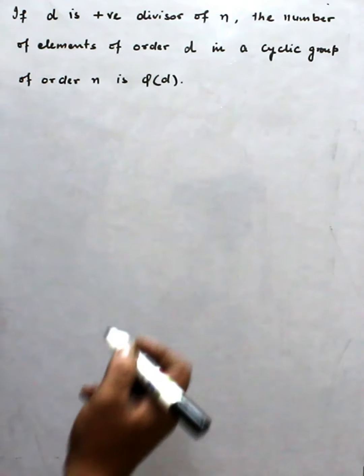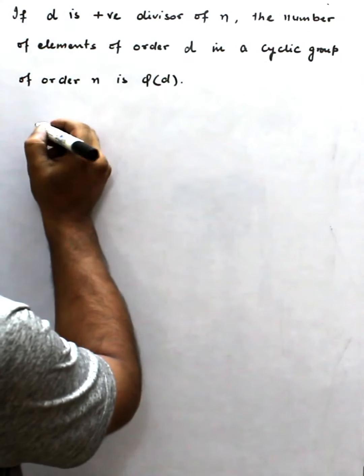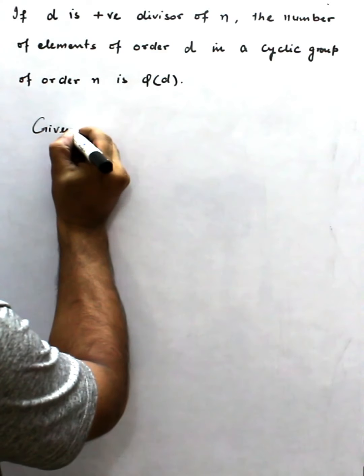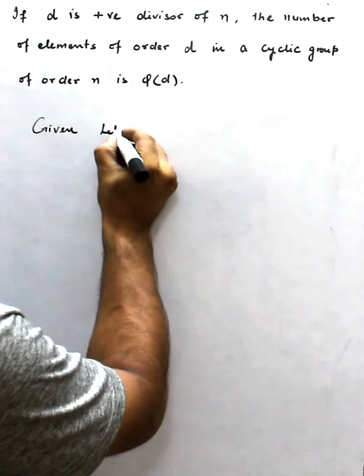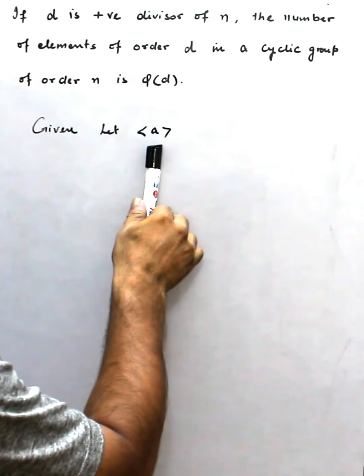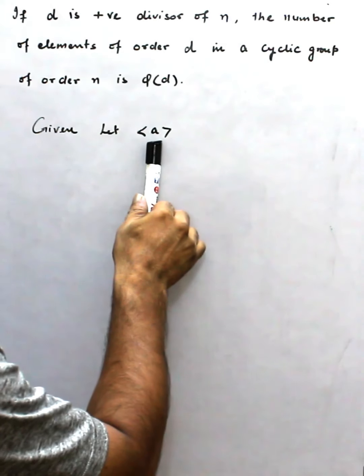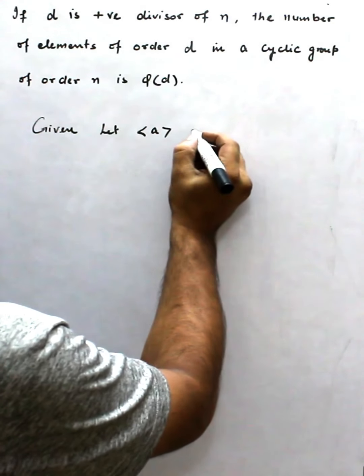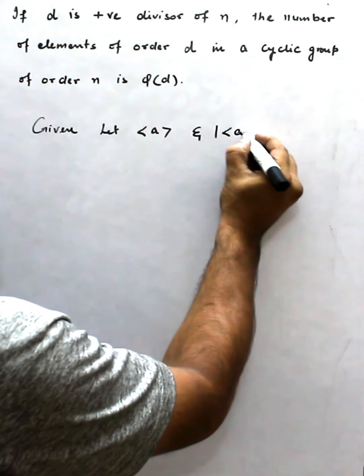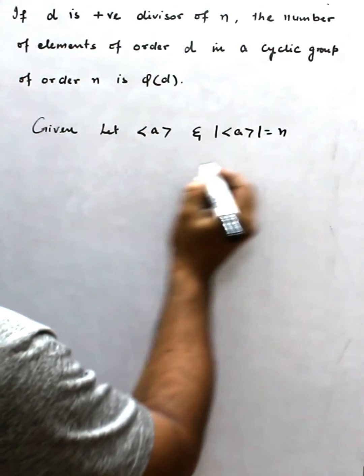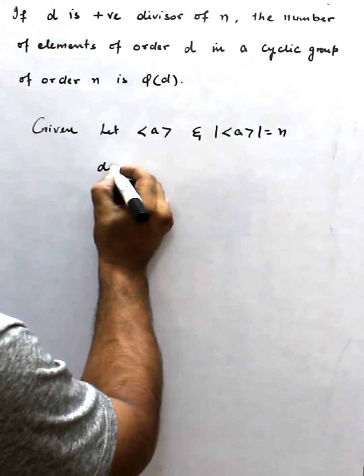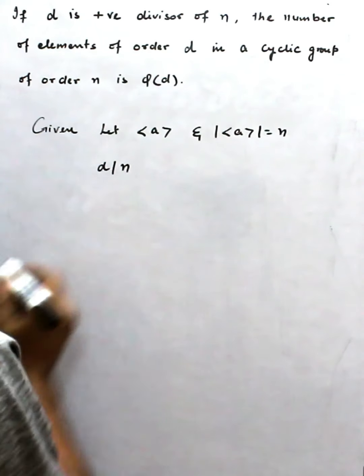First, what is given and what we have to prove. Given: Let <a> be the cyclic group generated by a, and the order of the cyclic group <a> is equal to n. Also given: d is a divisor of n.